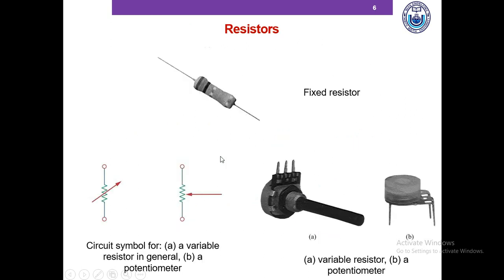These are some of the symbols and images of commonly used resistors. This is a fixed resistor with color coding to identify its value. Alternatively, you can use a multimeter to determine the resistance. This is a symbol of a variable resistor, and this is a symbol of a potentiometer — a potentiometer is basically a type of variable resistor. In the image on the right, this one is the potentiometer and this one is the variable resistor, where we turn the knob to change the resistance.